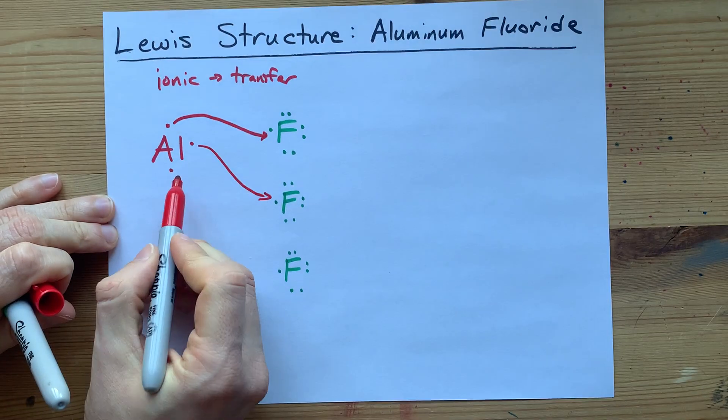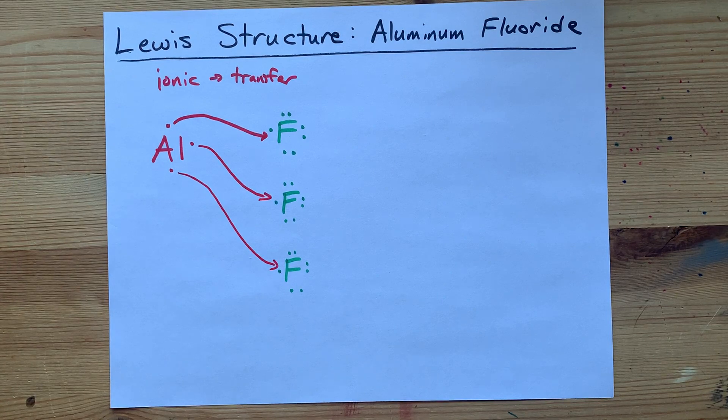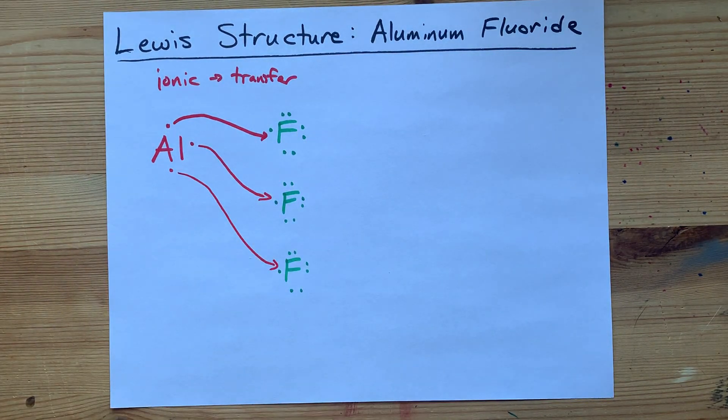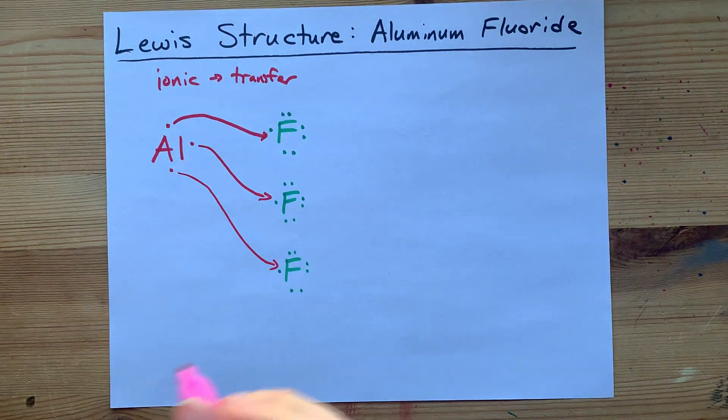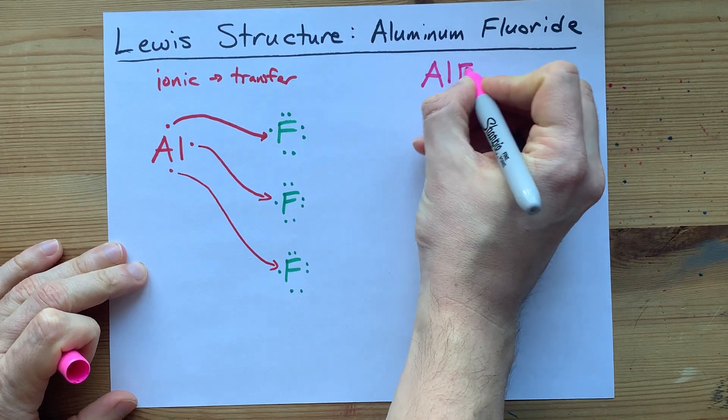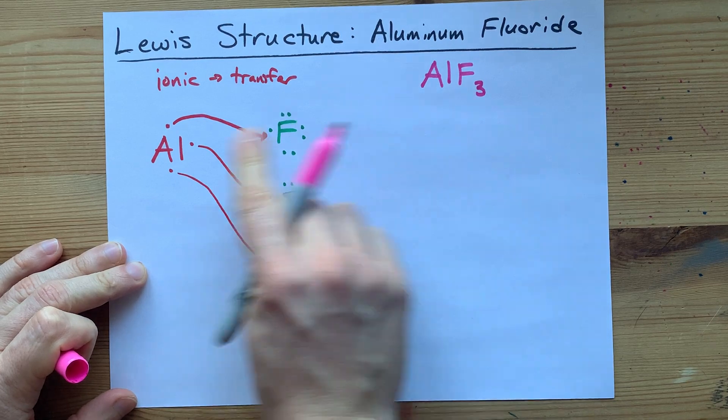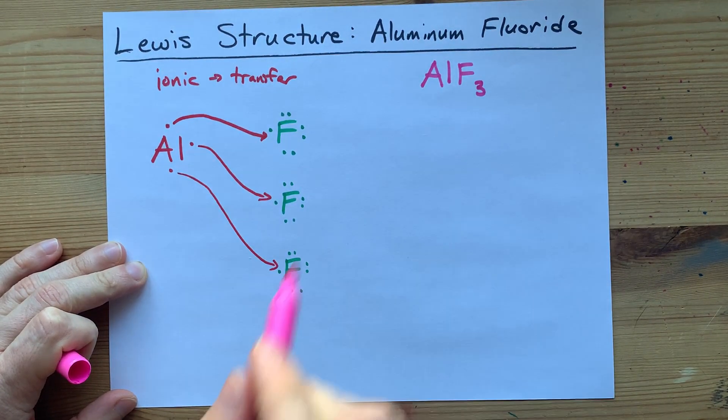That electron will go to that fluorine, and that electron will go to that fluorine. We have three fluorines which have gained one electron each, and one aluminum which gave away three electrons. It's no surprise that the chemical formula for aluminum fluoride is AlF3. You need one aluminum giving away its electrons across three fluorines. That's where it comes from.